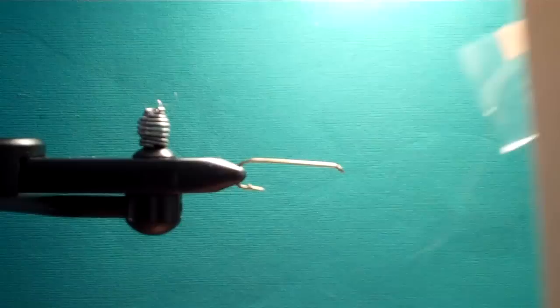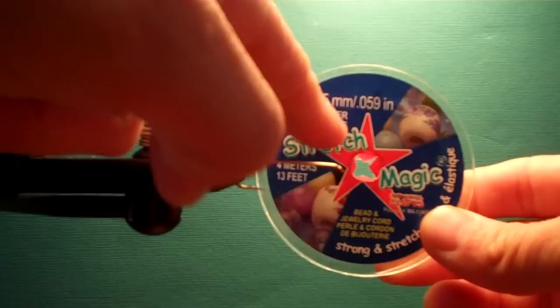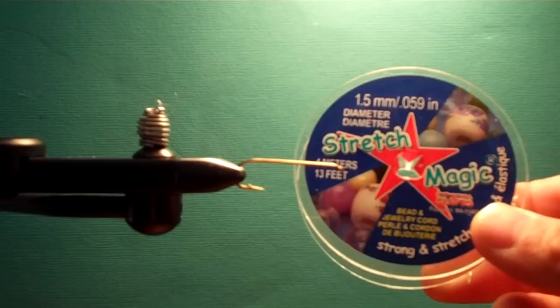And then the body is going to be Stretch Magic 1.5 millimeter. This is from AC Moore, Joanne Fabrics, or Michael's Craft Store. It's an alternative to using Vinyl Rib from your fly shop.